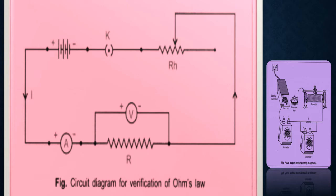After making these connections, ensure they are tight, neat, and clean. When you switch on the key, current flows from the positive terminal of the battery to the negative terminal. Keep the current minimum using the sliding contact of the rheostat. If both the voltmeter and ammeter pointers move, the connection is correct and you can start taking readings. In the next slide, we will understand how to read an ammeter and a voltmeter.